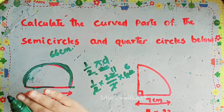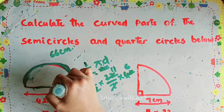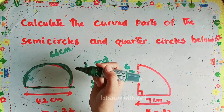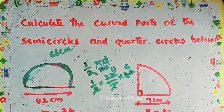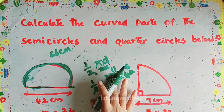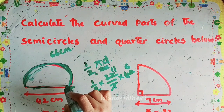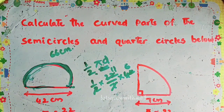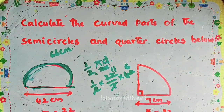If they ask about the perimeter of the semicircle, we need to add the diameter to the curved part. So: perimeter of semicircle = curved part + diameter. First find the curved part, then add the diameter value to get the full perimeter.